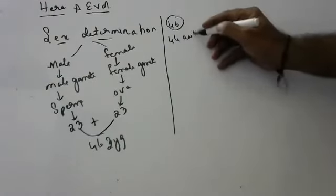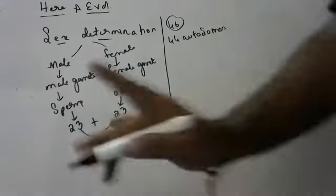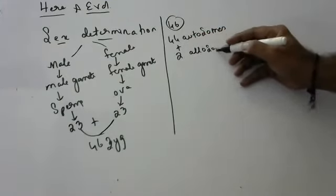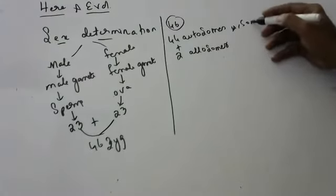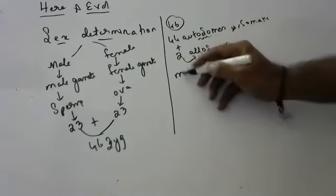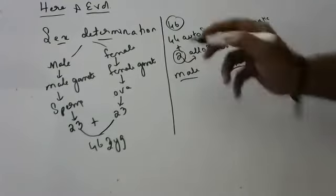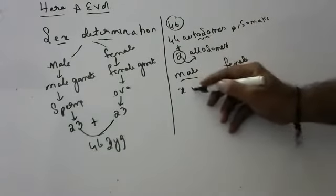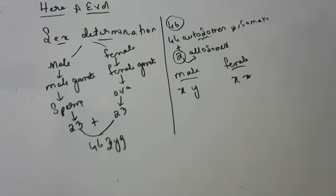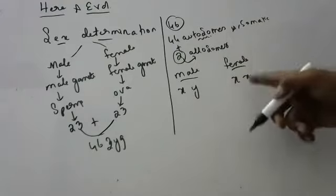Of the 46 chromosomes, 44 are called autosomes — they don't involve in sexual reproduction. Two are called allosomes. In males, these two are XY, and in females they are XX. These are the chromosomes in sperm and ova that determine sex.